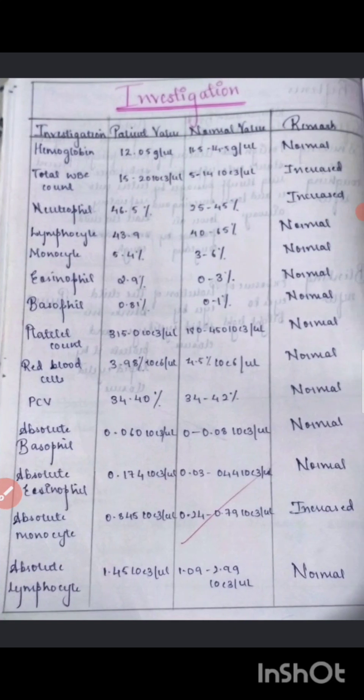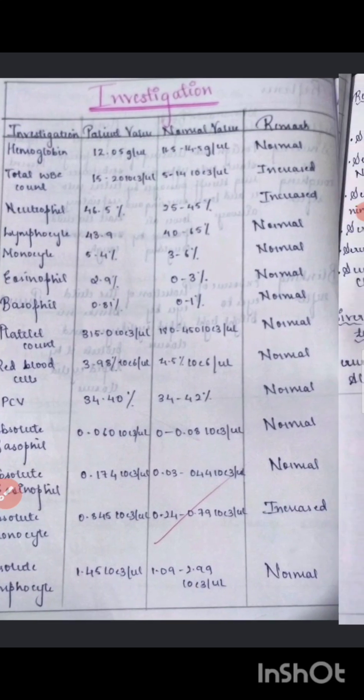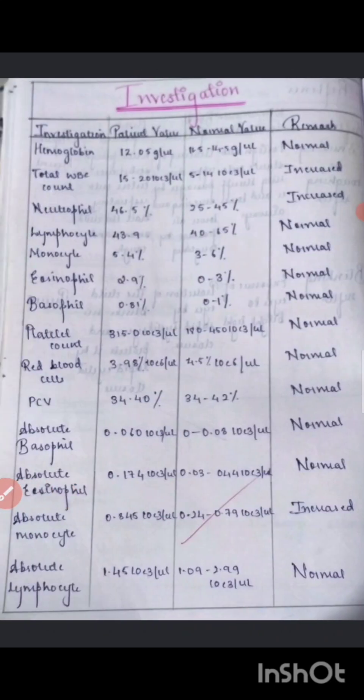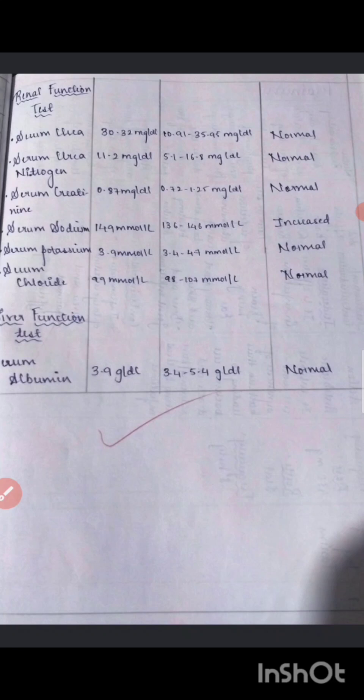Then comes the investigations. From the case paper, mention investigations such as hemoglobin, WBC, neutrophils — recording the patient's value, the normal value, and the remark indicating whether it is increased, normal, or decreased. Mention all investigations relevant to the child.